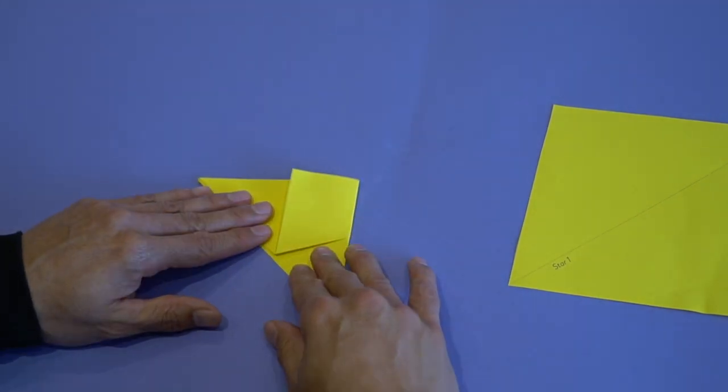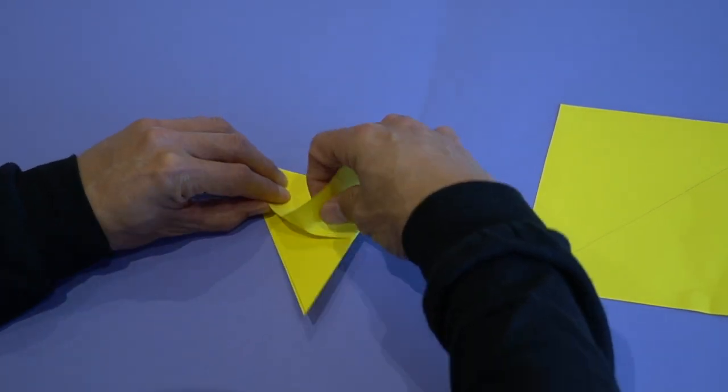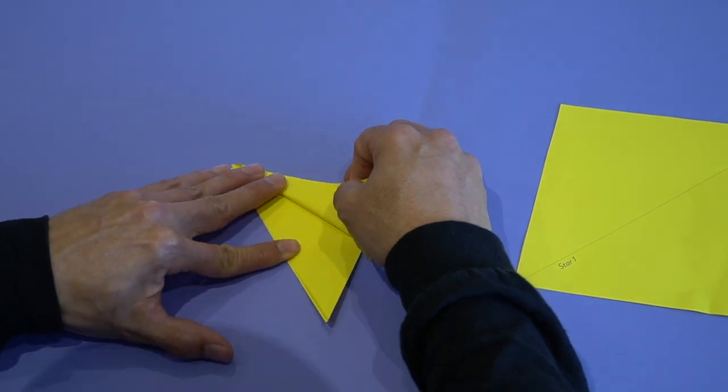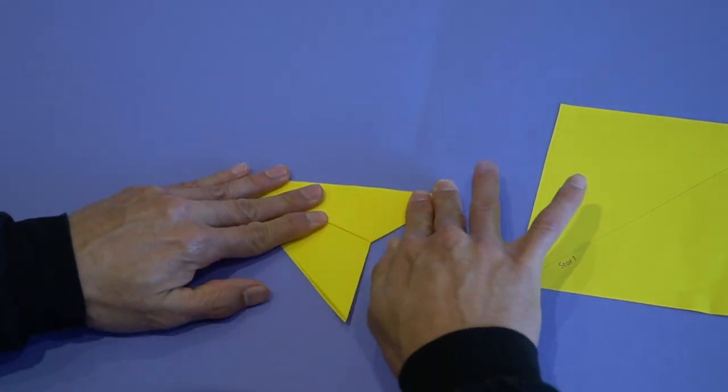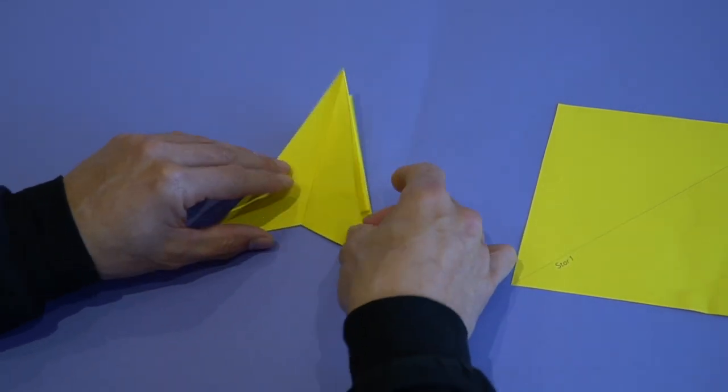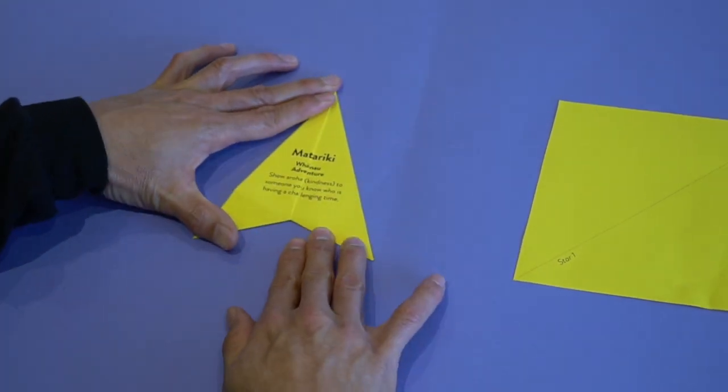Turn it around again, take your forefinger, place it on the inside there, and fold along the top edge. Turn the whole thing over, and it should look like this.